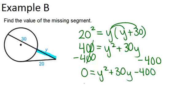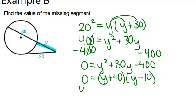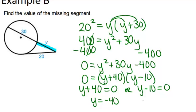And we can factor this as Y plus 40 and Y minus 10, which gives us two answers when we use the zero product property. Because either Y plus 40 equals zero or Y minus 10 equals zero, which means either Y equals negative 40 or Y equals 10. Now Y equals negative 40, again, doesn't make sense because you can't have a negative length. So that doesn't make sense, and our answer must be Y equals 10.